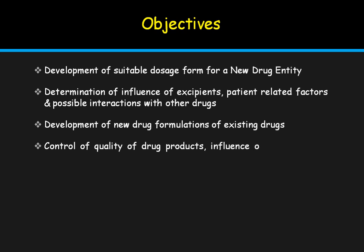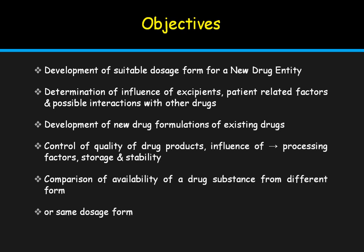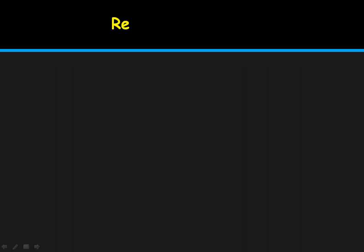Further objectives include control of the quality of drug products, assessment of the influence of processing factors, storage, and stability, and comparison of the availability of drug substances from different forms — ultimately providing comparative results across all formulations of a particular drug, or the same dosage form produced by different manufacturers.